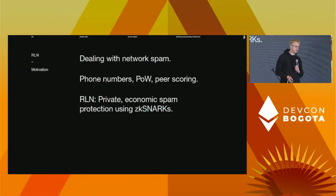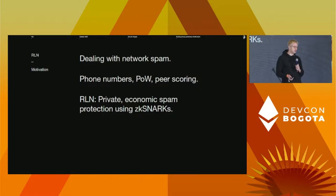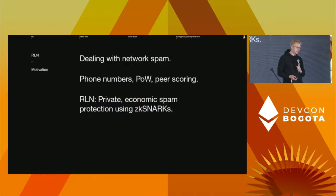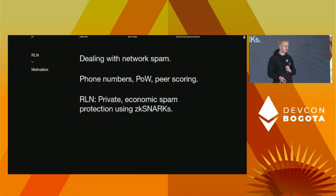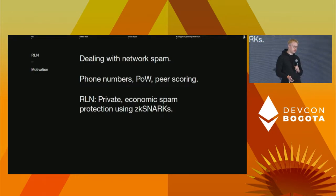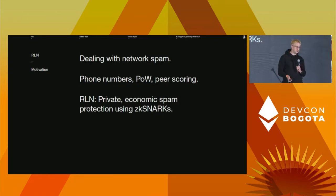Since the peer-to-peer relay network is open to anyone, there's a spam problem. Existing solutions like Google, Facebook, Twitter, Telegram, and Discord use phone number verification, which is largely Sybil-resistant but is centralized and not private at all. Historically, Whisper used proof of work, which isn't good for heterogeneous networks. Peer scoring is open to Sybil attacks and doesn't directly address spam protection in an anonymous P2P network. The key idea here is to use RLN — Rate Limiting Nullifier — for private economic spam protection using ZK-SNARKs. There's a write-up on vac.dev, and another talk tomorrow afternoon will go into RLN in more detail.